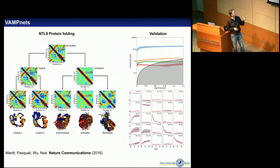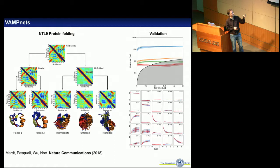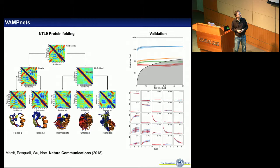This is applicable to larger systems. For an NTL9 folding trajectory from the D.E. Shaw Anton dataset, building VAMPnets with different numbers of states resolves folded and unfolded for two states, and for five states resolves different folded and unfolded or intermediate sub-states.